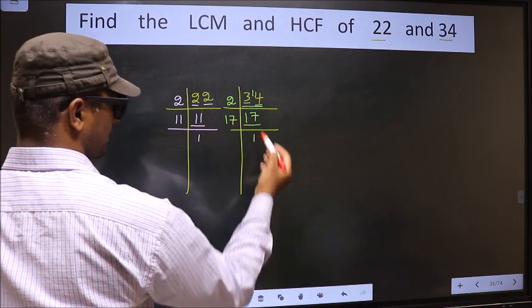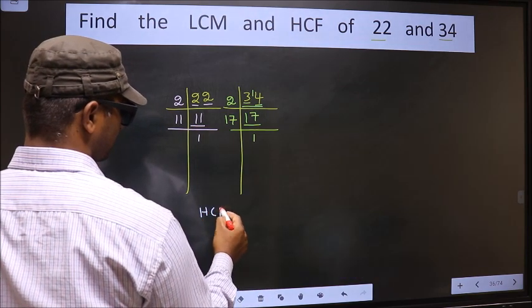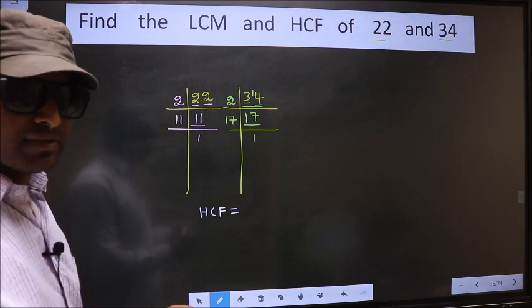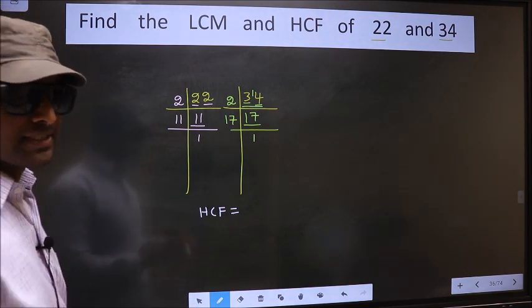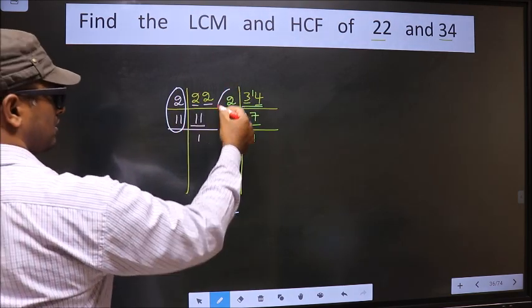So our HCF is, HCF is the product of numbers which should be present over here and also here.